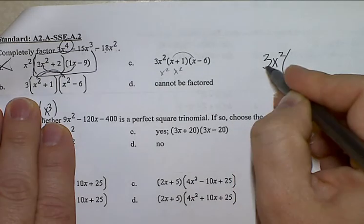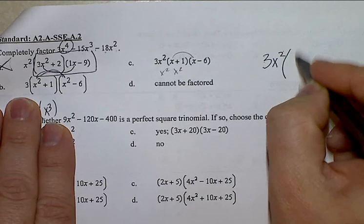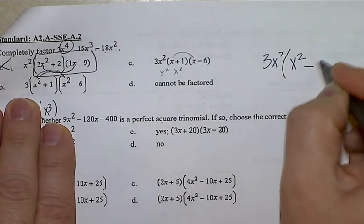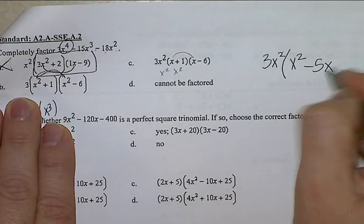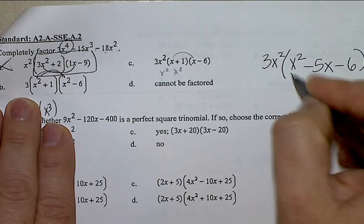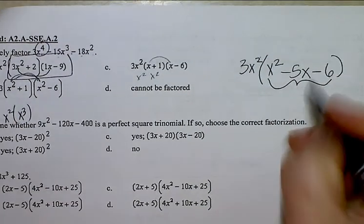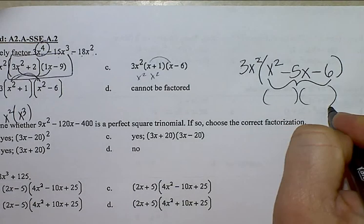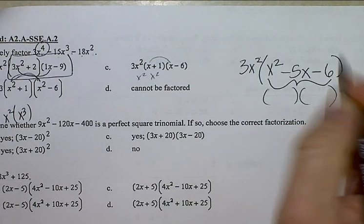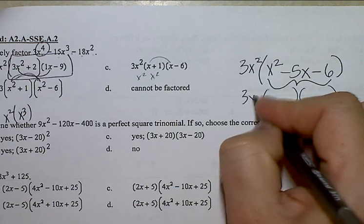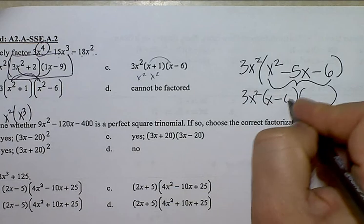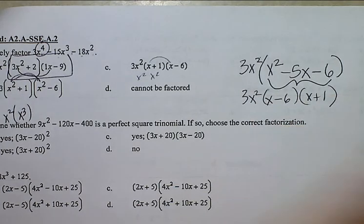When I factor out a 3x squared, I'd be left with x squared minus 5x minus 6. Now I'm going to take this portion, and I'm going to factor what multiplies to equal negative 6 and combines to give you negative 5. Negative 6 and positive 1. Is that an option? Option C.